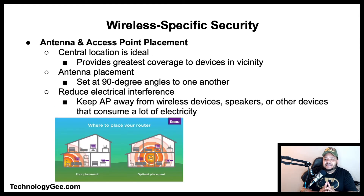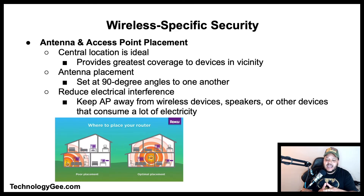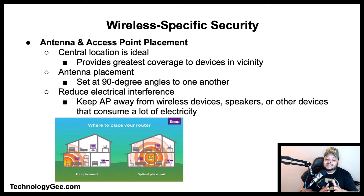Antenna and access point placement is very important for users connecting to a wireless network with a strong signal. The ideal location for an access point is a central location, which offers the greatest coverage to devices in the vicinity. For antenna placement on the access point, the antennas should be set at 90-degree angles to one another.